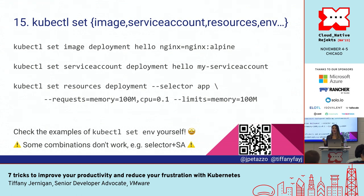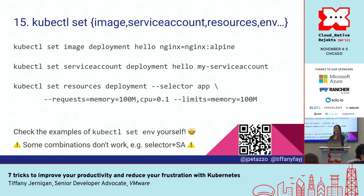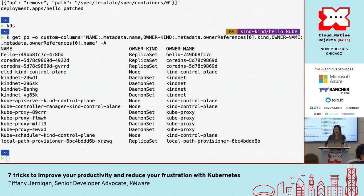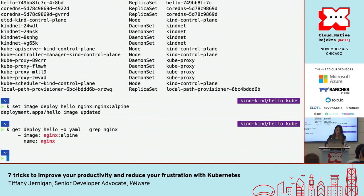Instead of what I did with the patch, you can actually use kubectl set. You can use kubectl set to change different things — like what your image is, or set a service account. You have to be careful with some of these because you can do --all, and if you set a service account that doesn't exist for all resources, now you've made all your stuff start failing. If I do a kubectl set image and then kubectl get deployment, we can see it's now Nginx Alpine.